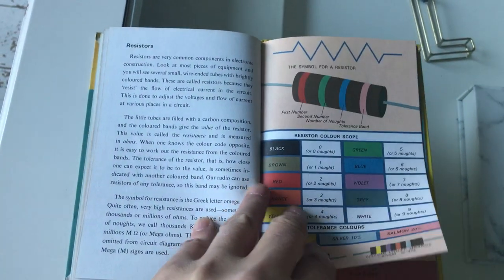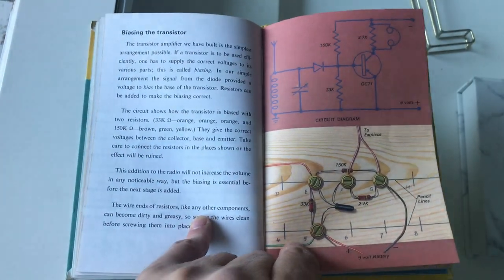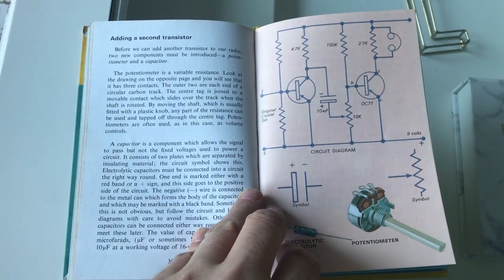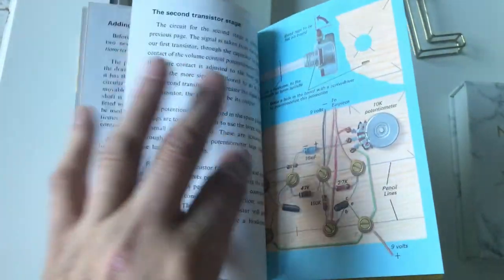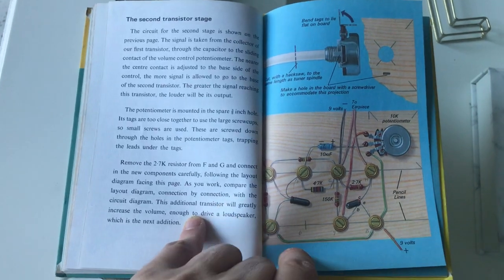And then the resistor code, biasing the transistor, adding a second transistor. Okay, and then an overview of the second transistor stage, quite complex.